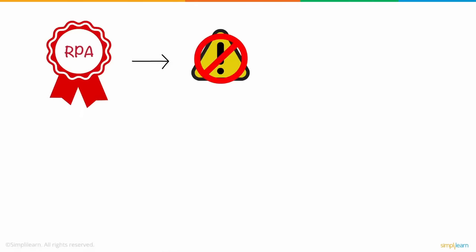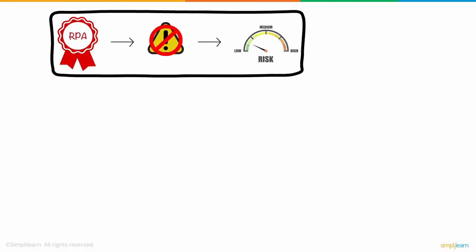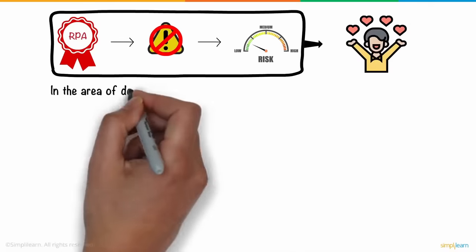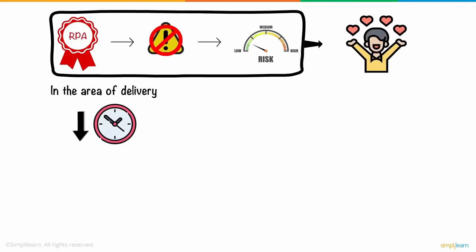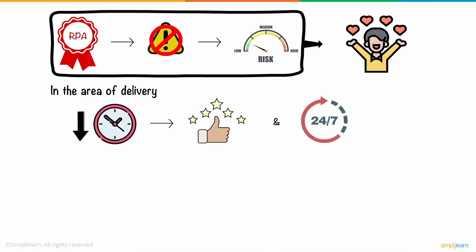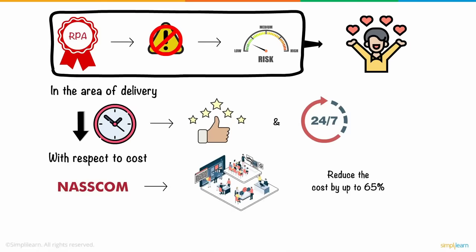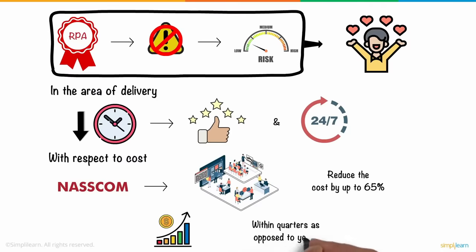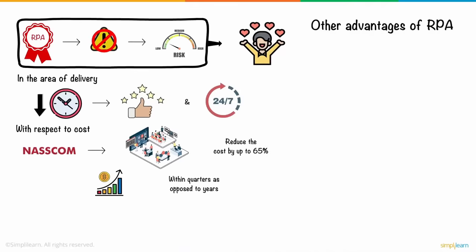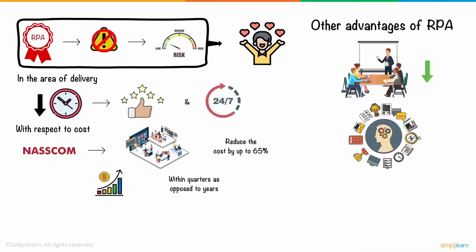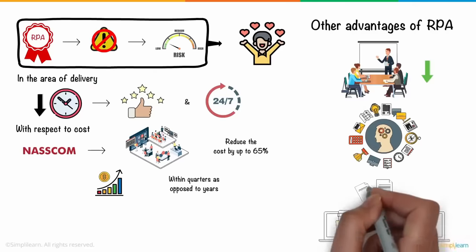When it comes to quality, RPA ensures consistent error-free output, leading to reduced operational risks, which in turn improves customer satisfaction. In the area of delivery, RPA can help decrease the average handling time, enhancing the customer experience and ensuring 24/7 business continuity. With respect to cost, according to NASSCOM, domestic businesses can reduce cost by up to 65% through RPA. It offers a higher ROI by driving positive returns within quarters as opposed to years. Other advantages include reduced training costs, minimal utilization of IT resources, and easier software migration.